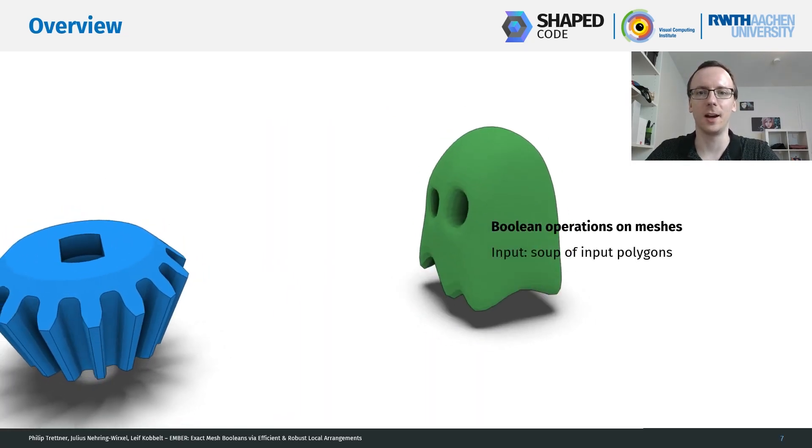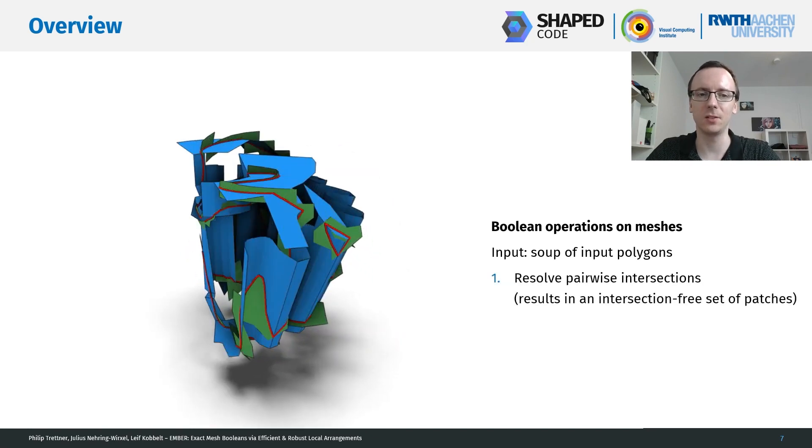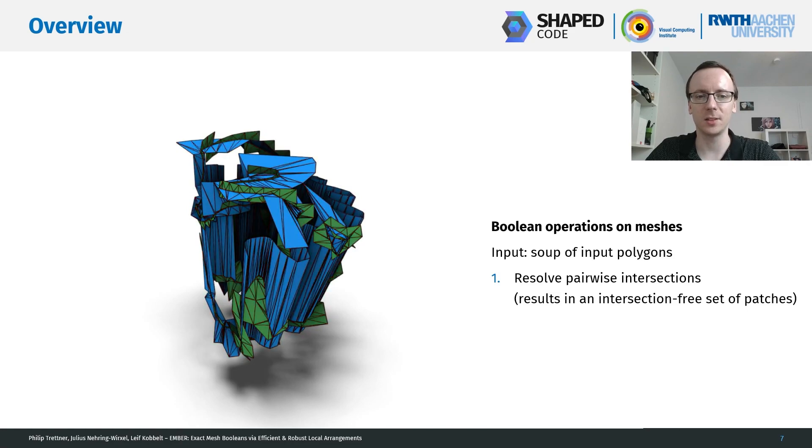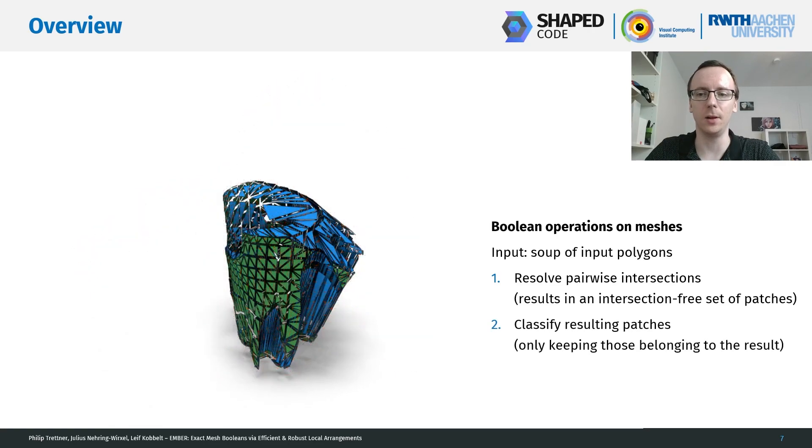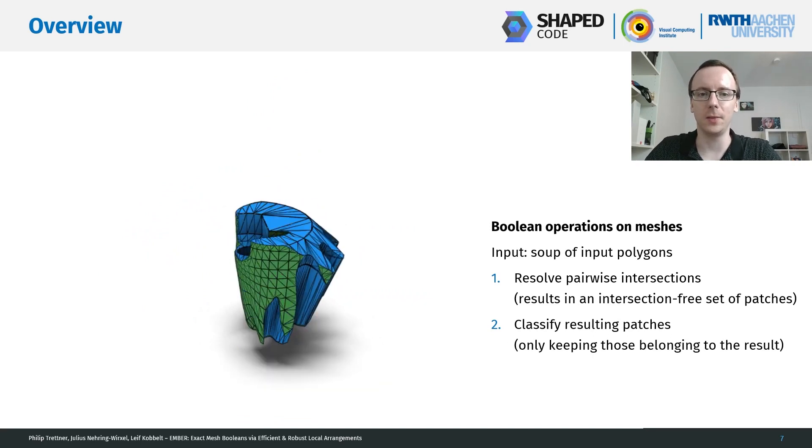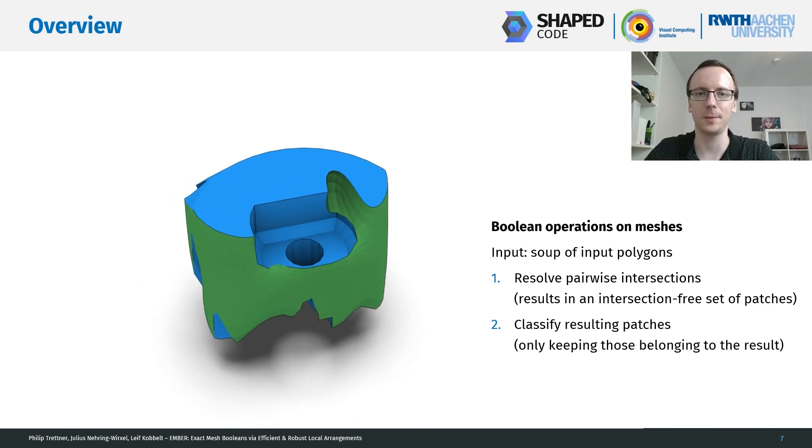Let's take a closer look on how booleans between meshes actually work. So as an input, we have a soup of polygons. And we start by resolving pairwise intersections, which means finding all intersecting triangles, and then cutting up the result so that we have a set of patches that do not intersect anymore. For these patches, we can now classify them as belonging to the result or not, and only keep those that do belong. As the result, we have here the intersection between the two objects.